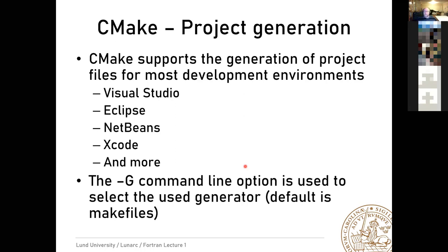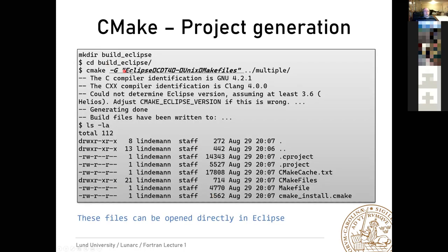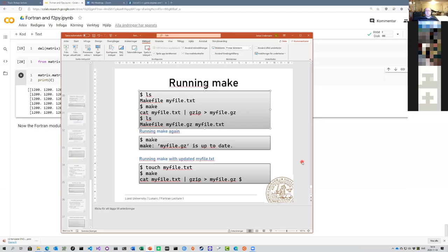CMake can generate project files for development environments — it supports Visual Studio, Eclipse, NetBeans, Xcode, and many more. You select the generator using the '-G' option on the command line. By default it generates Makefiles, but you can specify, for example, 'cmake -G "Eclipse CDT4 - Unix Makefiles"' to generate a project file for Eclipse along with suitable Makefiles for the Eclipse development environment. That was the lecture for today.